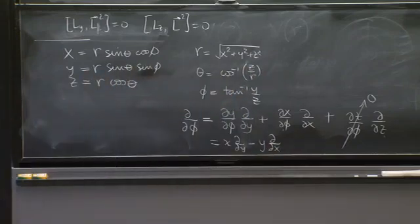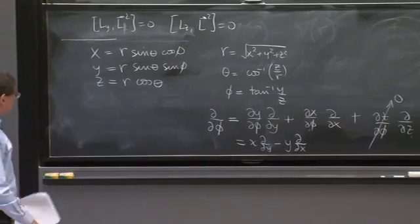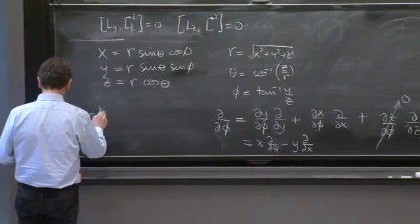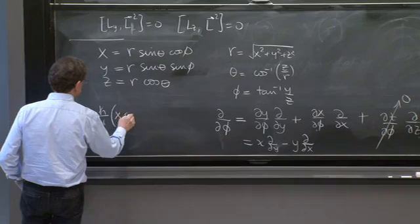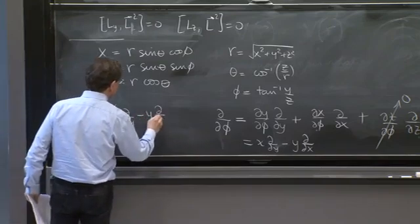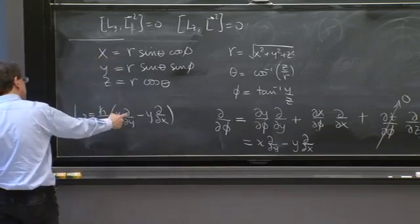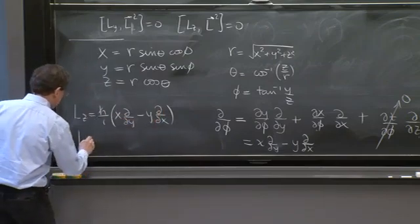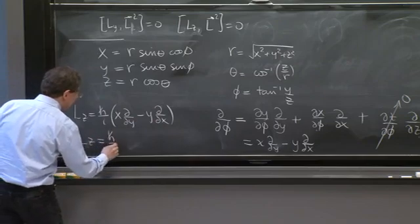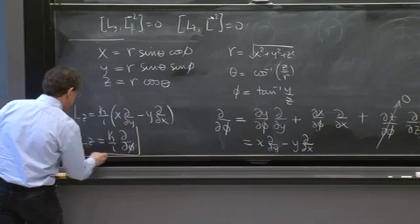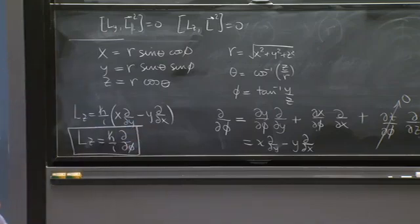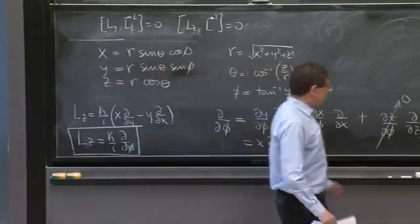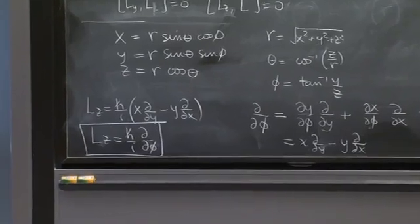And the x d phi is minus y. And you say, wow, x d d y is like x p y minus y p x. And this thing is d d phi. So lz you've discovered is just h bar over i, d d phi.